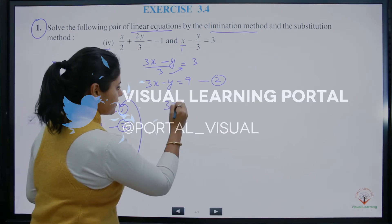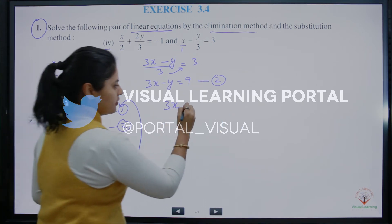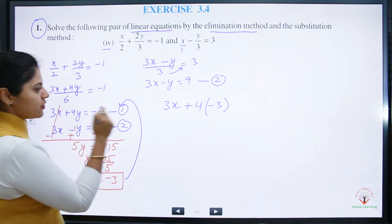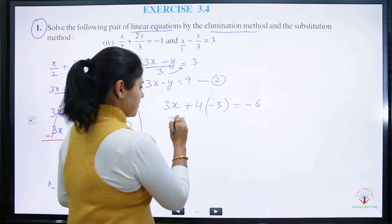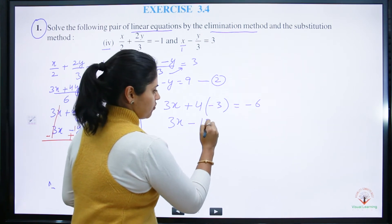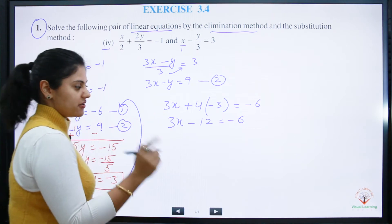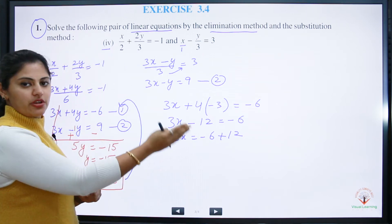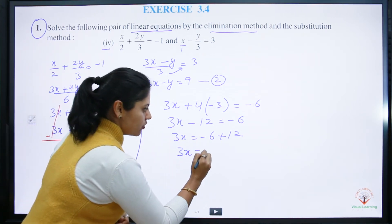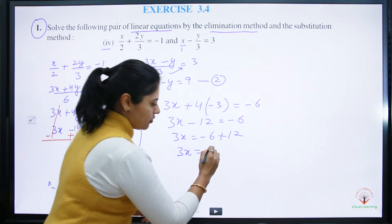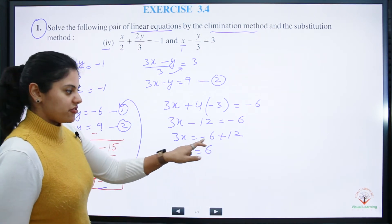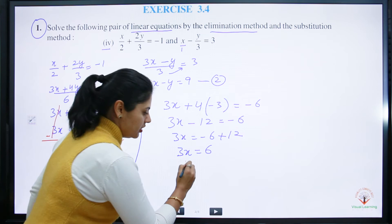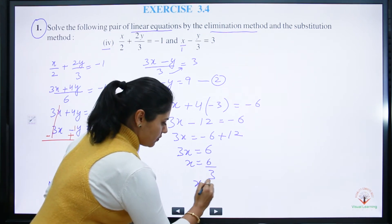Substituting y equals minus 3 into equation 1: 3x plus 4 into minus 3 equals minus 6. That gives 3x minus 12 equals minus 6. So 3x equals minus 6 plus 12. Now check the sign with the bigger term: 12 is positive, so 3x equals plus 6.